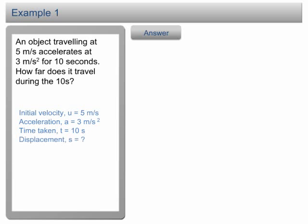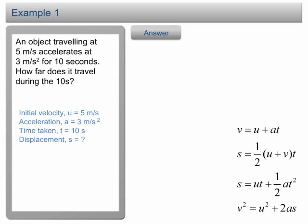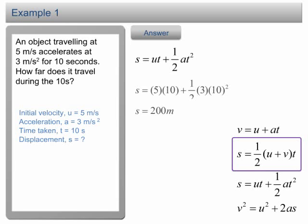We need to find the displacement. We have four equations of motion. In this case, we don't have the final velocity v. The only equation that does not involve v is s equals ut plus half at squared. Copy the equation, substitute u, a, and t into the equation, and solve it. We get s equals 200 m.